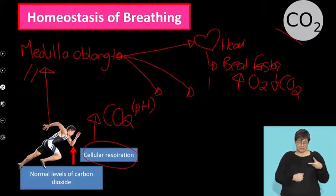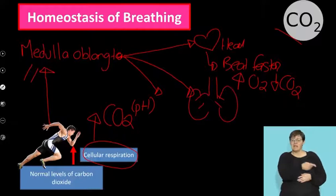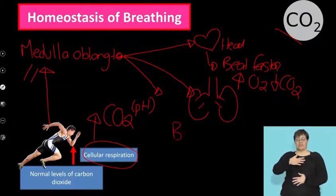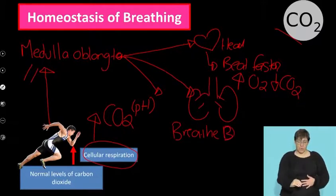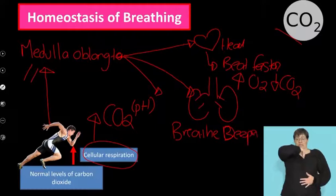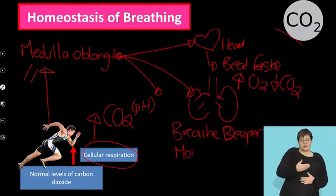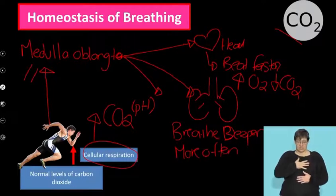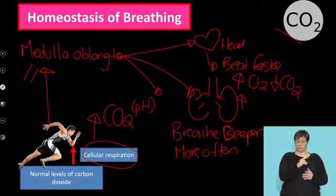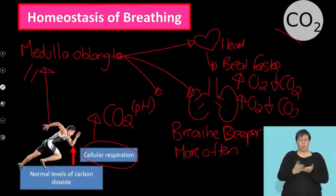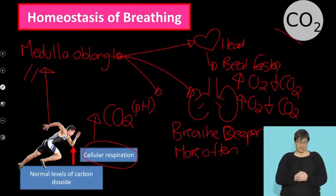The second organ it signals is the lungs. What does it say to the lungs? You must breathe in deeper — big breath — and you must breathe in more often. So if I breathe deeper and more often, what am I doing? I'm increasing my oxygen intake and I'm getting my carbon dioxide out faster.